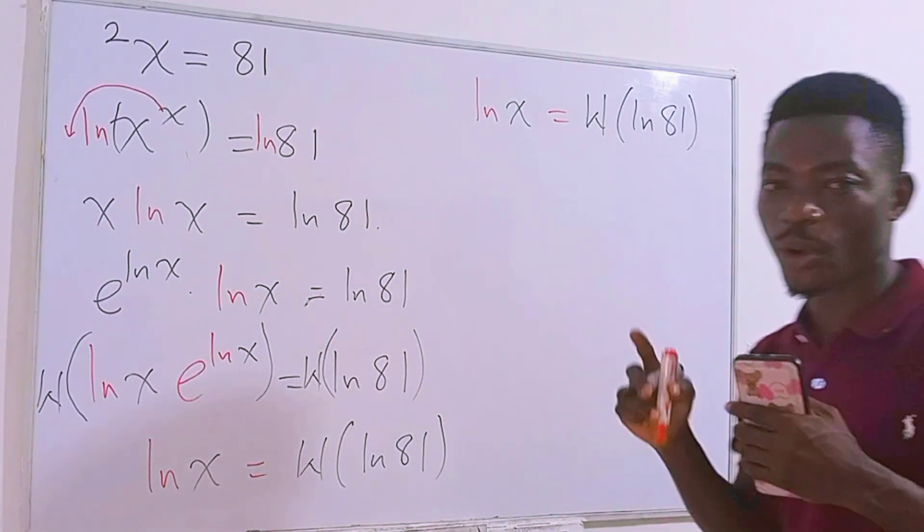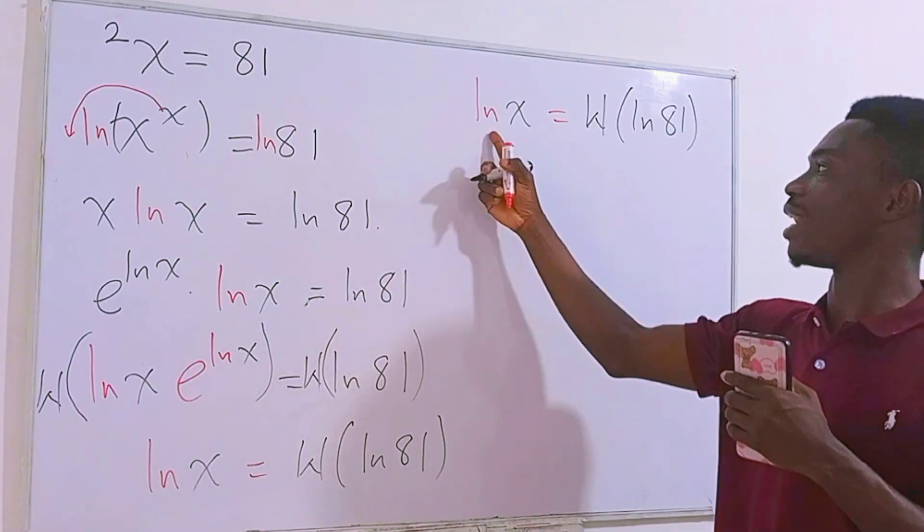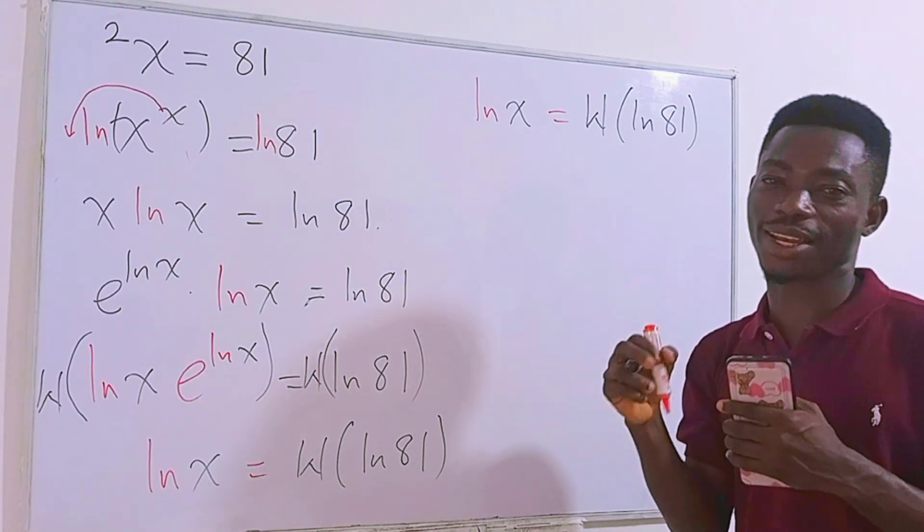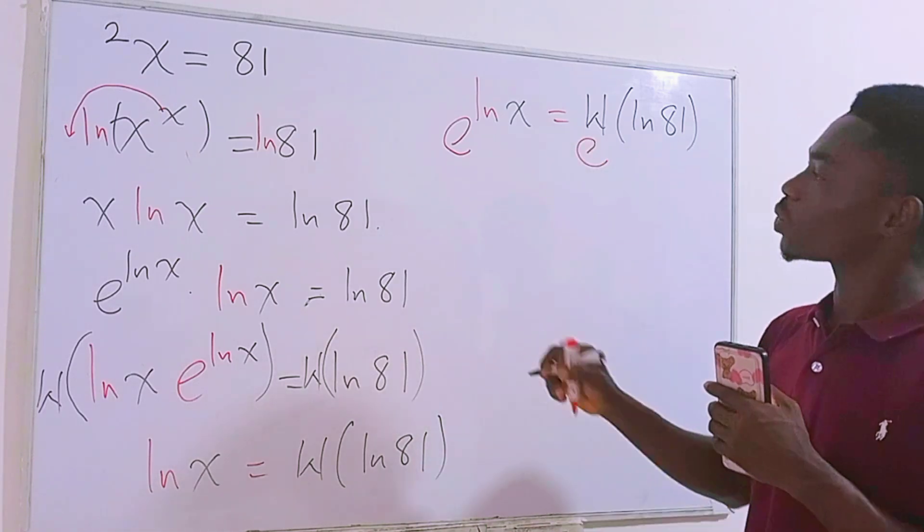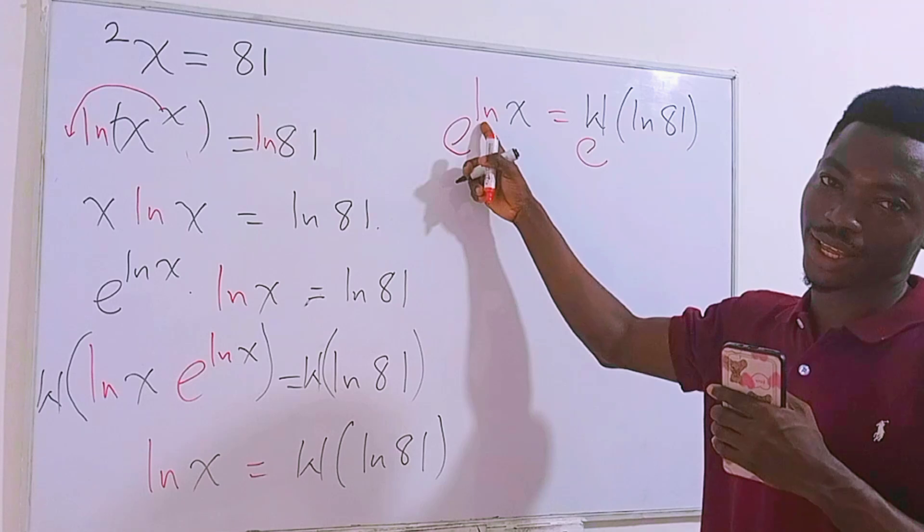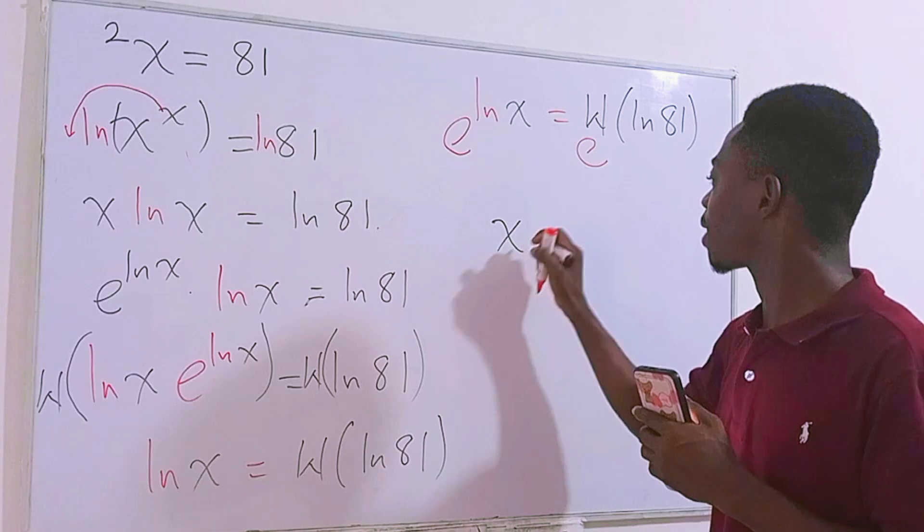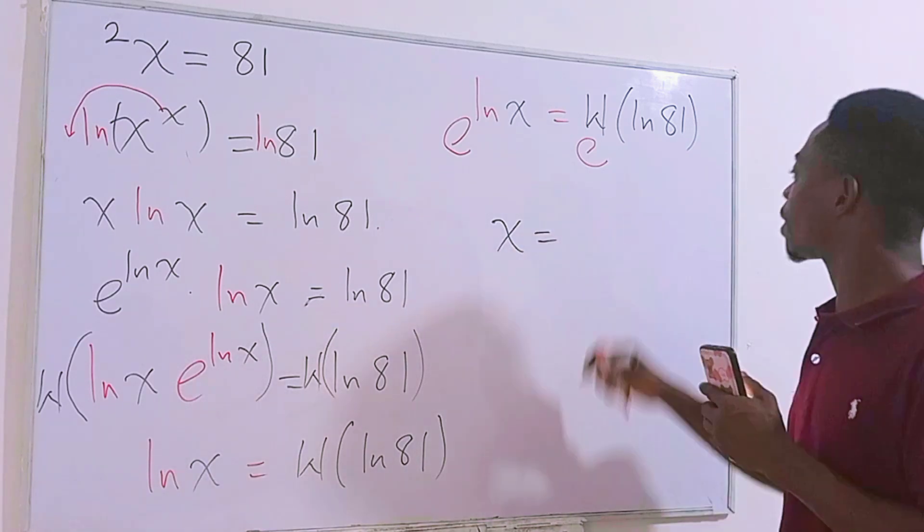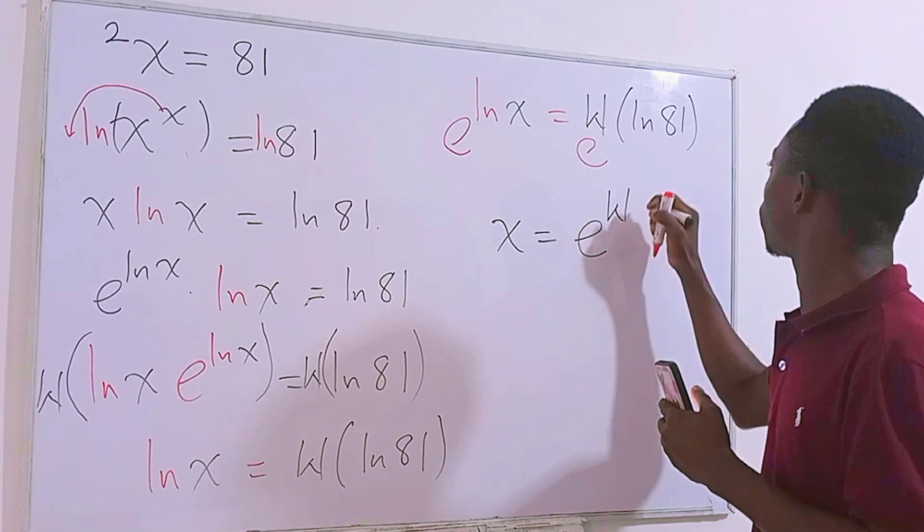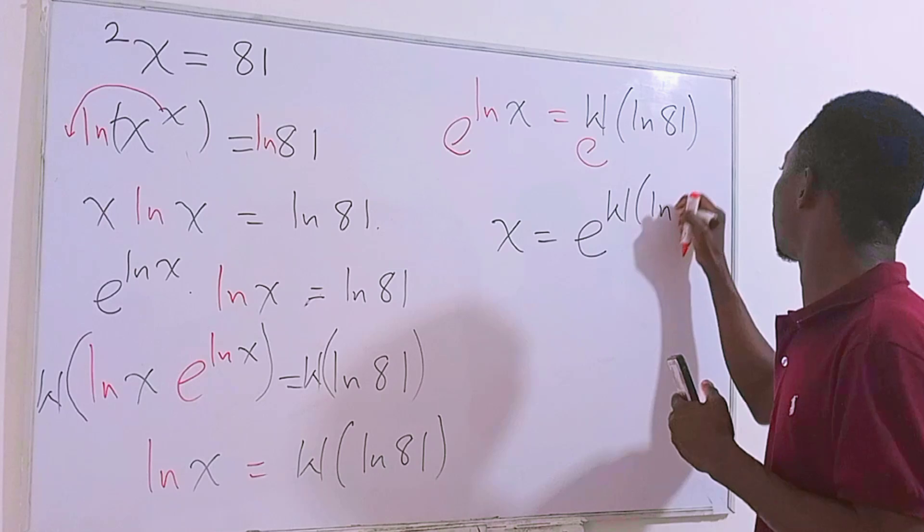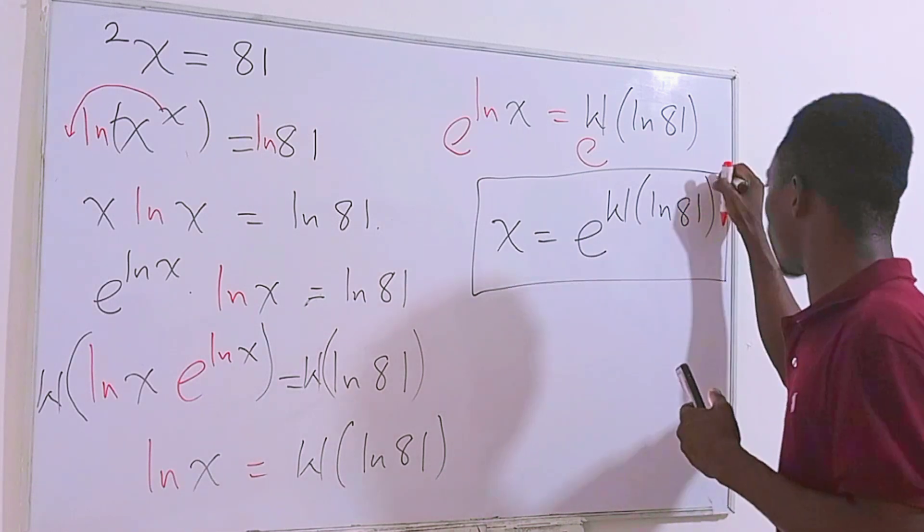Now check this. We are looking for only x and not ln of x. How can we get rid of this ln? Now to get rid of this ln we need to take e on each side of the equation again. So that this e will undo this ln then on the left hand side you'll be left with this x. So we have our x here nicely like that. Then the right hand side is going to be e to the power the Lambert W function of ln of 81. And that is our final answer to the problem.